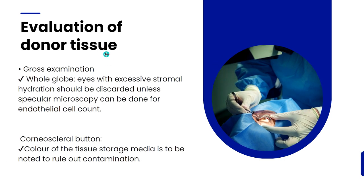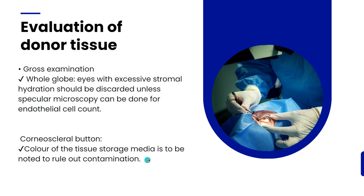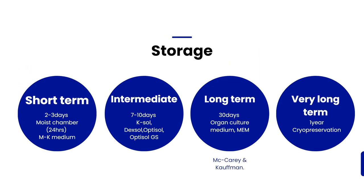Evaluation of donor tissue: check the corneal scleral button and note the colour of the storage media to rule out contamination. Eyes with excess stromal hydration should be discarded unless specular microscopy for endothelial cell count can be done. Once satisfied with the donor tissue, store it. Short-term storage is 2–3 days in moist chamber or MK medium; intermediate storage is 7–10 days using K-Sol, Dexol, or Optisol-GS media; long-term is 30 days using organ culture medium; and very long-term storage (up to one year) uses cryo-preservation. MK medium stands for McCarey-Kaufman medium.